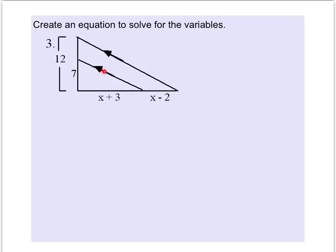In this particular figure, we have these parallel line symbols, and so that means that these side lengths are broken up into proportional parts. And so to set up our ratios, we would use x plus 3 and x minus 2.